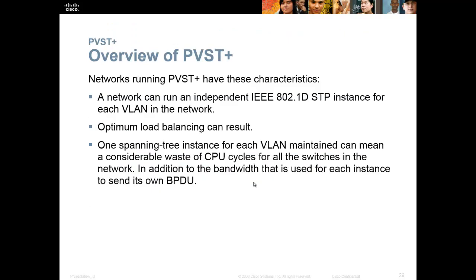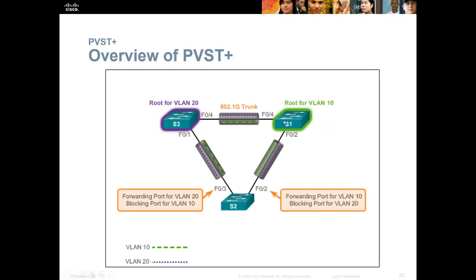With per-VLAN spanning tree, you've got a spanning tree instance for every VLAN on your network — 12 VLANs means 12 instances all being calculated. One switch can be the root for VLAN 10 and another for VLAN 20. So a port can forward for VLAN 10 but block for VLAN 20, and the other port does the reverse. You get all these instances of spanning tree, different root bridges, and different rules for each port based on VLAN. The more VLANs you have, the more processing power needed, and the slower the switch makes decisions.